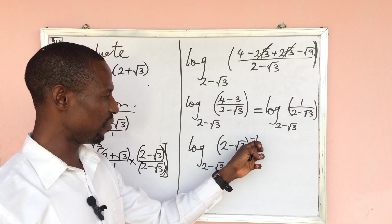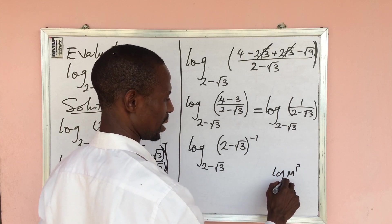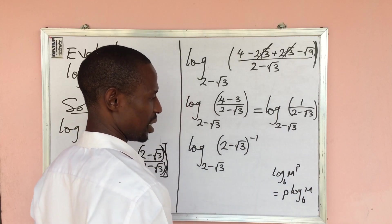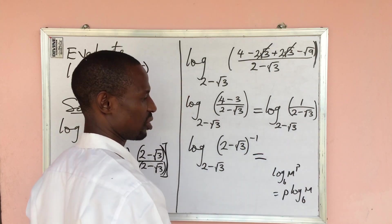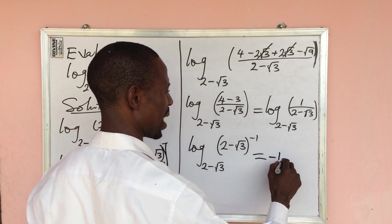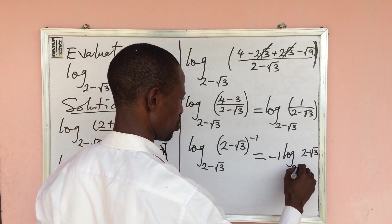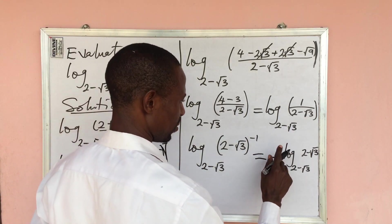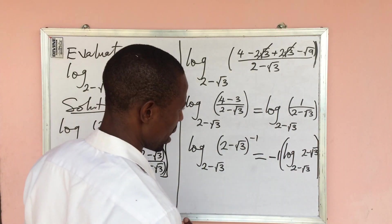Now we apply the power law of logarithms, which states that log(m^p) base b equals p × log(m) base b — in other words, bring the power down to multiply. Applying this, we get −1 × log(2 − √3) base (2 − √3).